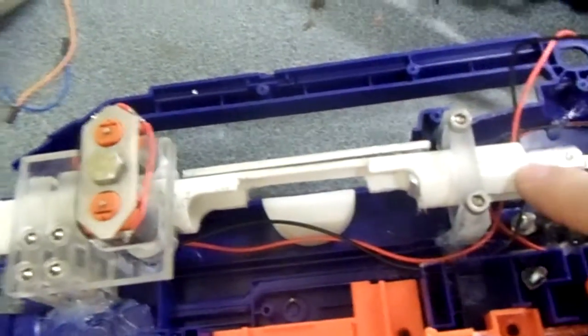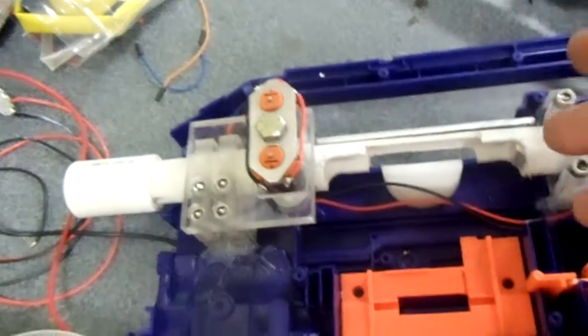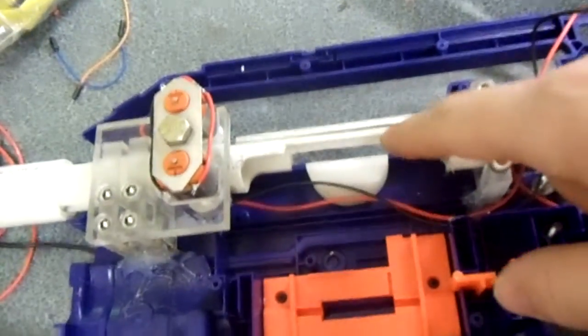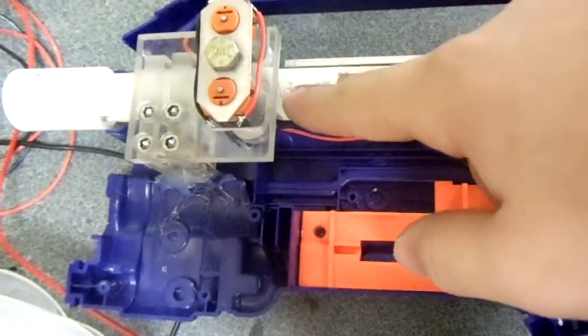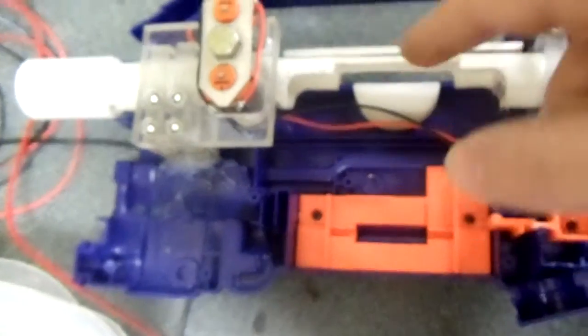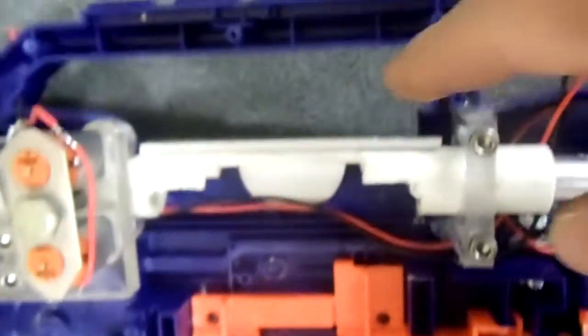The breech assembly that goes from back here to the front is just half-inch PVC pipe. This cutout here for the magazine was made with a Dremel. I attempted to use a milling machine, but it's too thin up here to do anything.